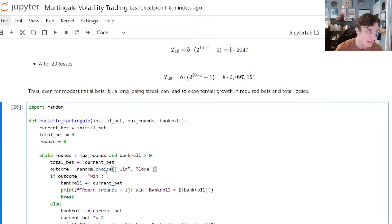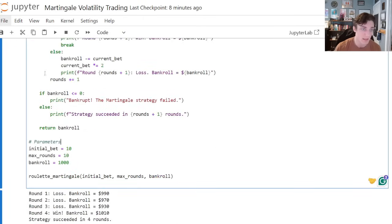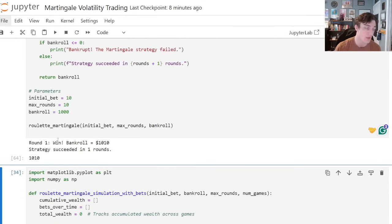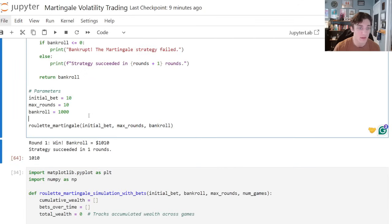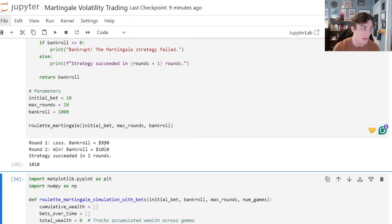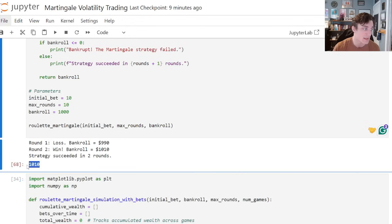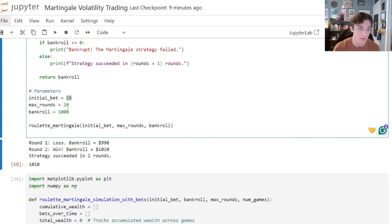What I have here is a simulation of the Martingale strategy with roulette. So every time I run this, we're going to essentially try to win money from roulette. And we are going to play until we win. So if we lose, we'll double down. If we lose again, we'll double down. And every time I run this, so we won, we won, we won, I run it again, we win. Here we lost the first round, so we double down, we win the second round. As you can see, eventually you always end up at this 1,010, right? So my initial bet is 10, my max rounds is 10 here just for the sake of the simulation. And then the bank roll is 1,000.